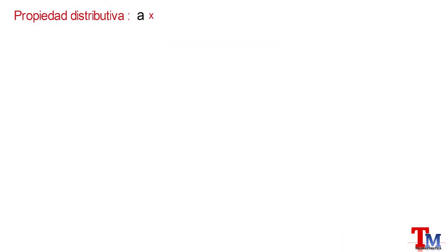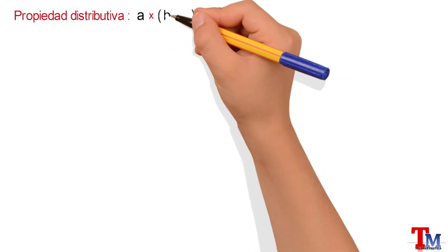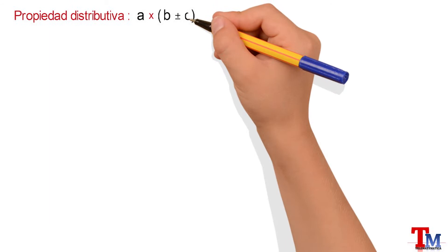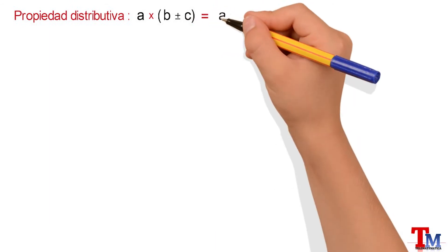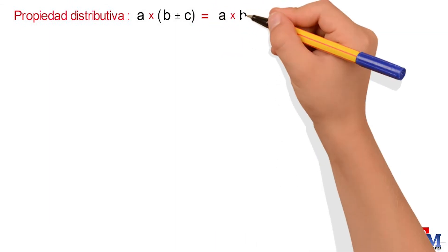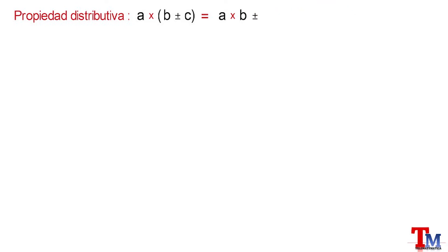Property number 3 is the distributive property, which is defined as: A multiplied by the quantity B plus or minus C will be equal to A multiplied by B, plus or minus A multiplied by C.